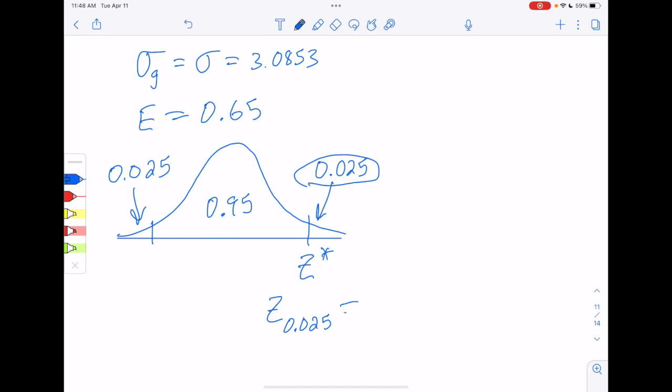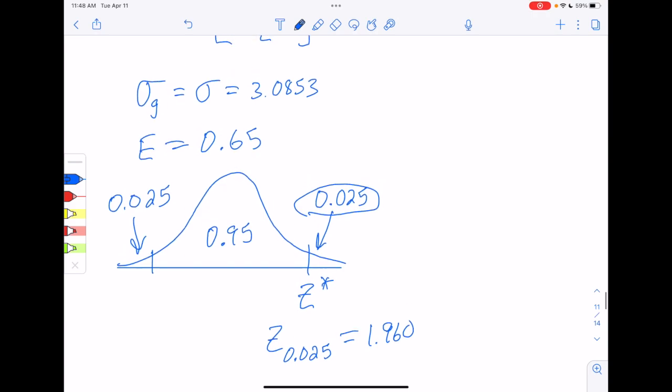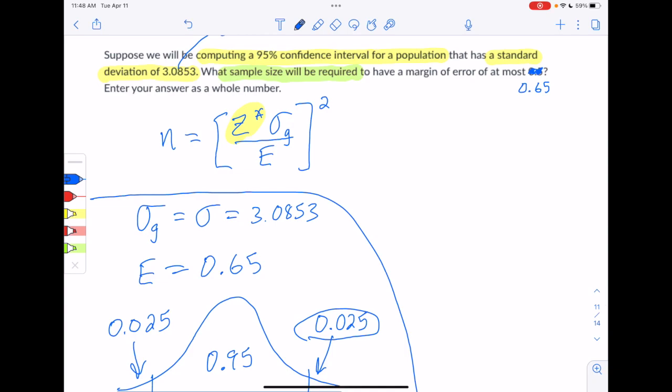So this is 1.960. And now we have all the information that we need. So scratch work down here, complete. Let's go start filling that into the formula. So we just found our z score, 1.960. This sigma guess, we're going to use the actual sigma that we are lucky enough to know on this problem. Divide that by the desired margin of error. And then remember to square the whole thing. That is a common mistake people do is forget to do that square piece. So don't forget that.